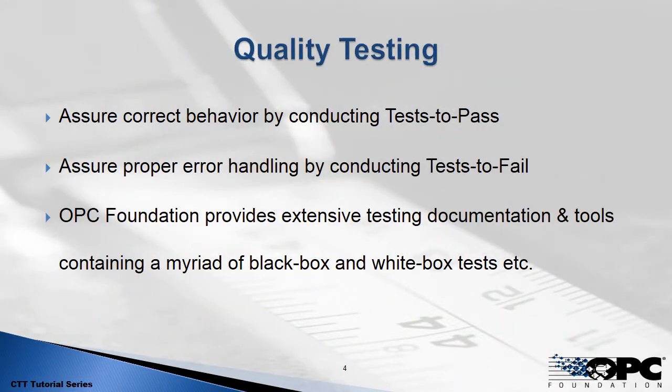What does it mean to do quality testing? We need to assure that the correct behavior of a product is achieved by doing tests to pass. This means we understand how products should behave so we can send instructions to those products, observe the behavior, and measure it to ensure they behave as expected. Tests to fail are also similar — we can send specific invalid or incorrect requests and measure the response to make sure the product does not crash and responds with the correct error codes as defined in the specifications.